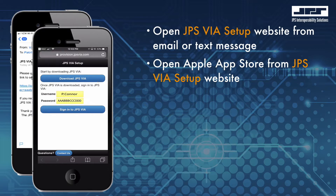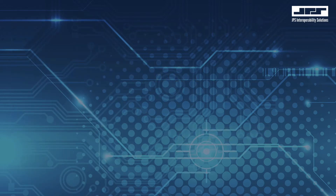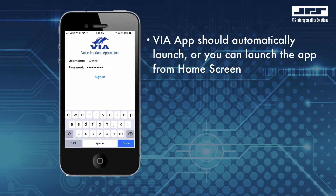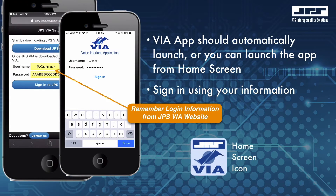From within the App Store, click on Install. It should take a few minutes or so to complete the installation of the app. Once the app is installed, click on Open, or you can launch the VIA app directly from the iOS home screen. You will then be prompted to enter your username and password that was provided to you from the JPS VIA setup website.